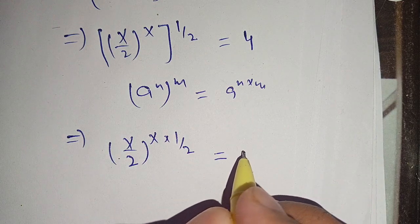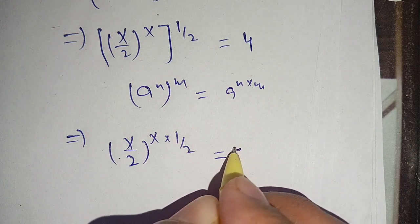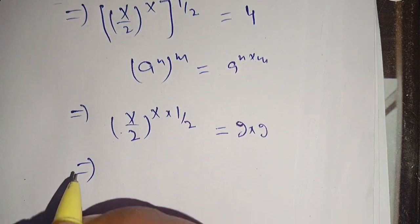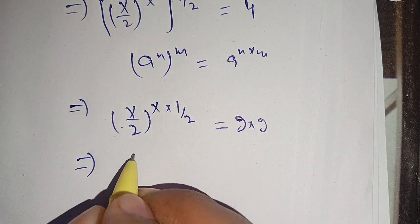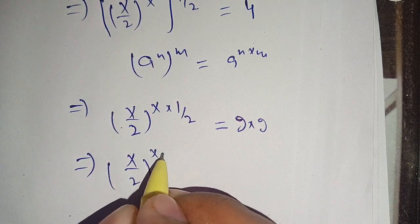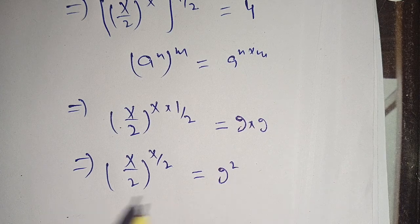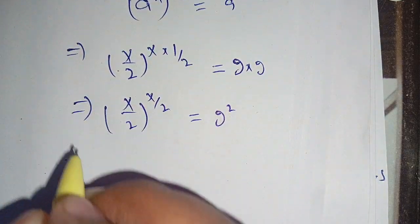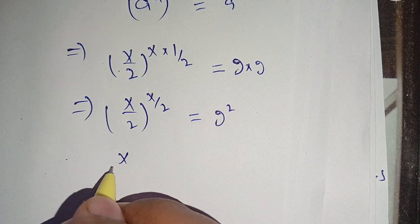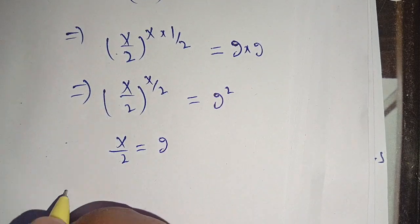We can break down 4 in terms of 2: 4 = 2 × 2 = 2². So we have (x/2)^(x/2) = 2². Now we can compare the base and the power, which means x/2 = 2.